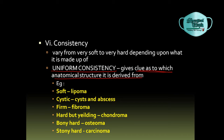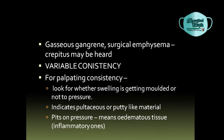If the consistency of the swelling is soft, it gives a hint towards lipoma. In cases of cystic consistency, a cyst or an abscess may be present. If the consistency is firm, the origin may be fibroma. A hard but yielding swelling is indicative of chondroma, a bony hard swelling suggests osteoma, and a stony hard swelling is suggestive of carcinoma. When palpating for consistency, check whether the swelling is getting molded to pressure — a putty-like material, or if the swelling pits on pressure, it is edematous or of inflammatory origin.